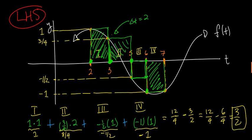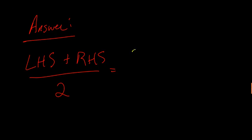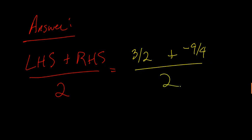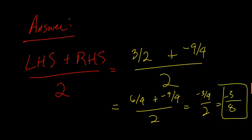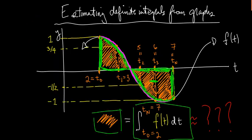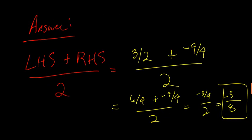To get the best estimate for the integral, we average the left-hand sum and the right-hand sum. The left-hand sum was positive 3/2, and the right-hand sum was negative 9/4. So we compute 6/4 plus negative 9/4, divided by 2. That's negative 3/4 divided by 2, which equals negative 3/8. We were right — the integral is negative. The reason is simply because the function spent more time underneath the x-axis than above it. The final estimate for the definite integral is negative 3/8.